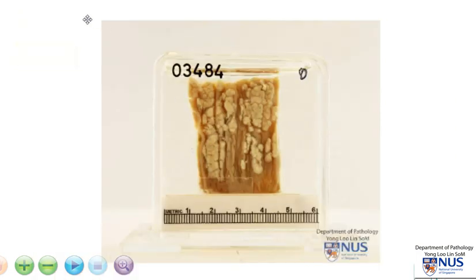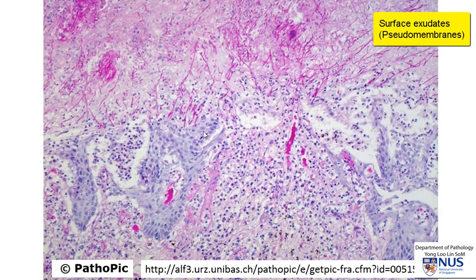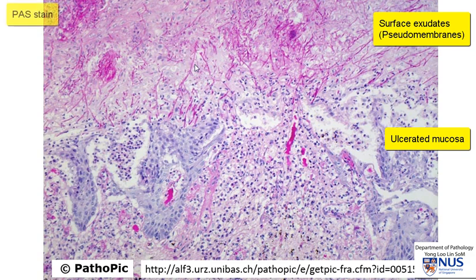Let's take a look at the microscopic appearance. This is a section taken from the mucosa. Here is the exudate over the mucosa — this corresponds to the pale yellowish pseudomembranes that we saw — and over here you have some ulcerated mucosa and there is some residual stratified squamous epithelium here.